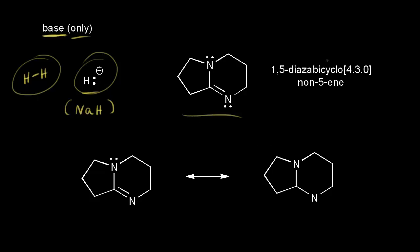Another example is the molecule with the abbreviation DBN. DBN functions as a base only and not a nucleophile. You might think a lone pair of electrons on a nitrogen could function as a nucleophile, but not when you have this fused ring system — that would be too bulky and prevents this from acting as a nucleophile. It does act as a base, though. Let's figure out which nitrogen gets protonated: the sp3 hybridized nitrogen or the sp2 hybridized nitrogen? It turns out to be the sp2 hybridized nitrogen. The lone pair of electrons picks up a proton and forms a bond, giving this nitrogen a +1 formal charge. This is the conjugate acid to DBN, and this conjugate acid is resonance stabilized.